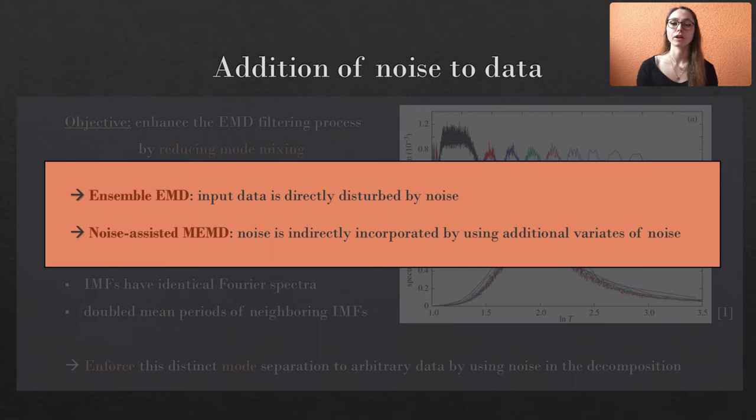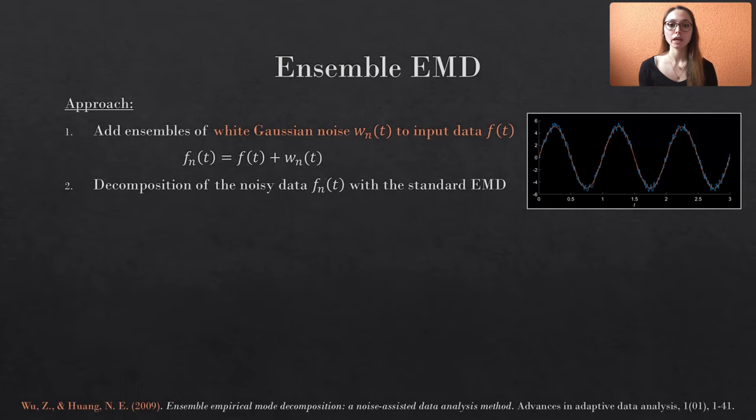Let's first take a look at the ensemble EMD. Basically, the input data F of t is disturbed by random Gaussian noise W of t, which yields noisy input data. This is exemplarily shown in the right figure where the original data is given in orange and the noisy data in blue. The noisy data is processed by the standard EMD method.